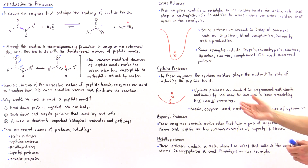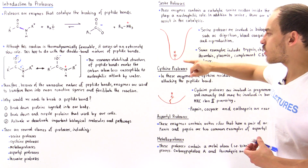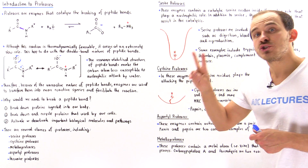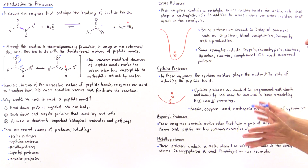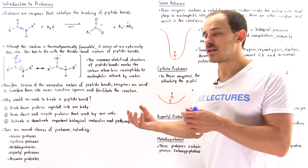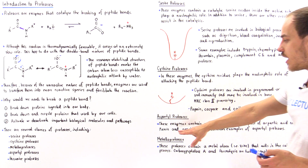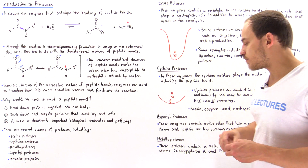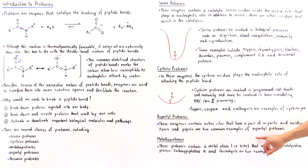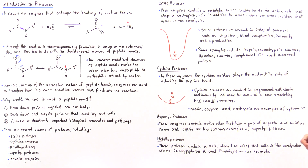Moving on to aspartyl or aspartate proteases: instead of serine or cysteine, inside the active sites of these enzymes we have aspartic acid — in fact, a pair of aspartic acid residues. As we'll discuss in a future lecture, one of those residues takes away a hydrogen atom and the other increases the nucleophilic character of the substrate molecule. Renin is an example of an aspartyl protease involved in regulating blood pressure, and pepsin is another example — a digestive enzyme used to break down ingested proteins.